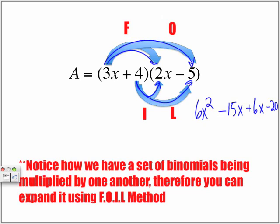If we look at it, we want to collect our like terms. Our like terms are the terms here in the middle. We have our expression 6x squared minus 9x minus 20. Therefore, the area of the rectangle that we had on that first slide is equal to 6x squared minus 9x minus 20. So here's our area.